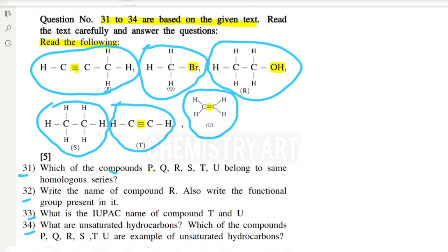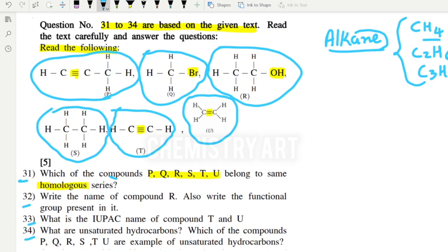Question 31 asks: which of the compounds P, Q, R, S, T belong to the same homologous series? You must know what a homologous series is. A homologous series is the series of organic compounds in which the number of carbons differs but they follow the same general formula. For example, alkane is a series starting from C1. The general formula of alkane is CnH2n+2, and all compounds in that series follow the same general formula — that is the homologous series.